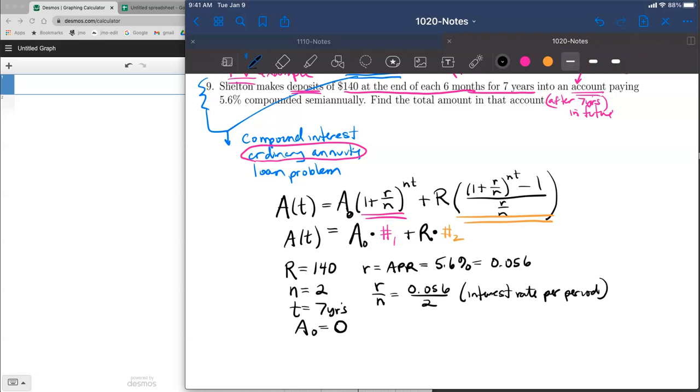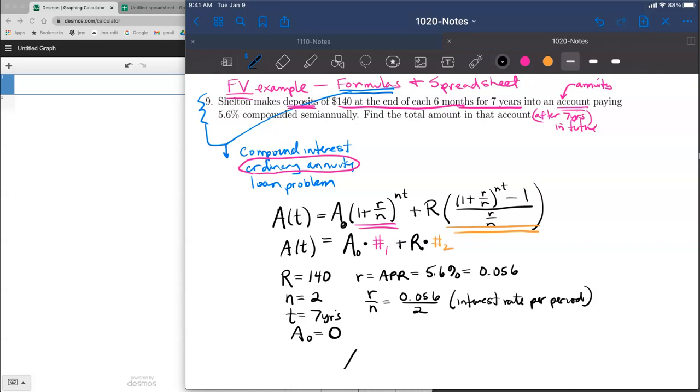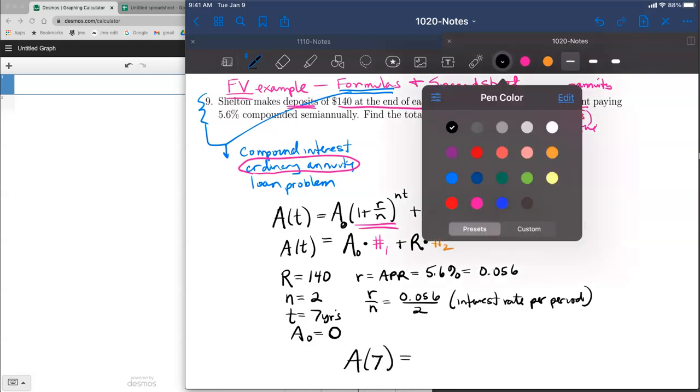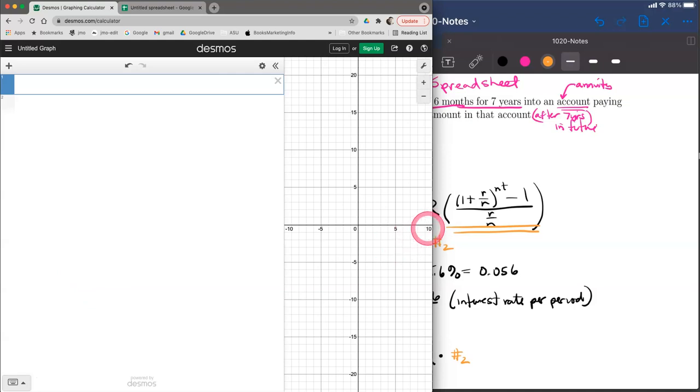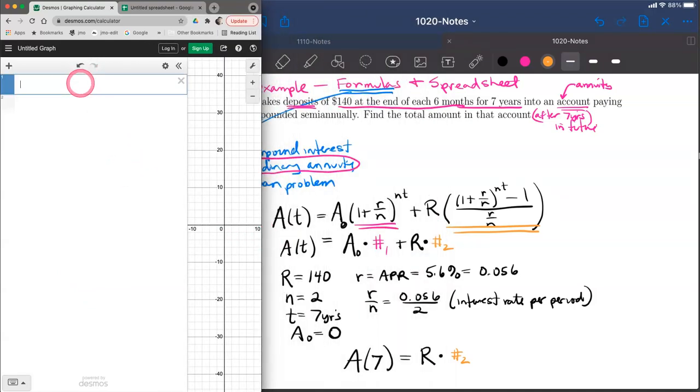Since A₀ equals zero, the amount in the account after seven years is just R ($140) multiplied by number 2. We can use Desmos to do this calculation. First, number 1 is (1 + r/n), which is (1 + 0.056/2) raised to the nt power. That's 2 times 7 years, so we make 14 payments.